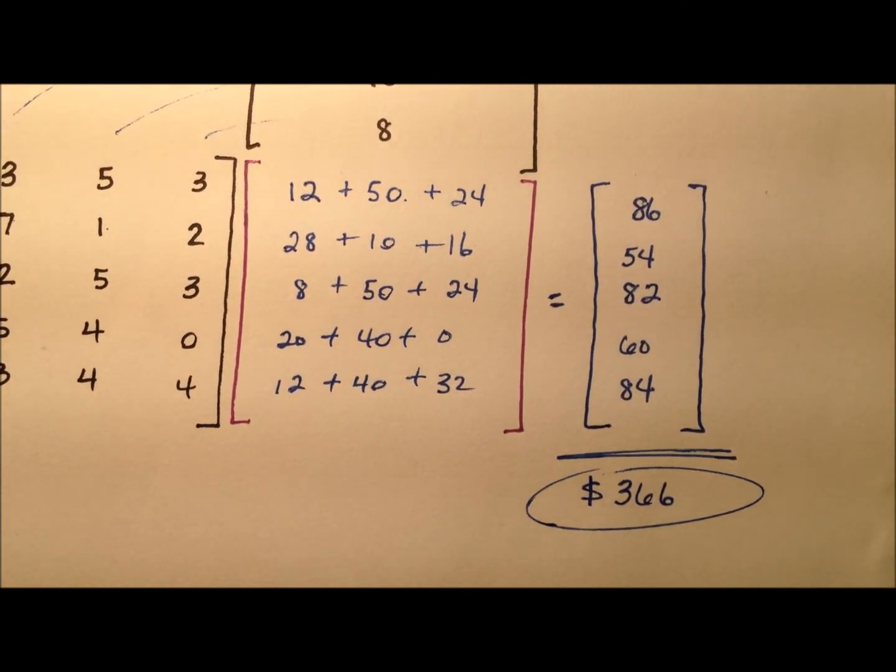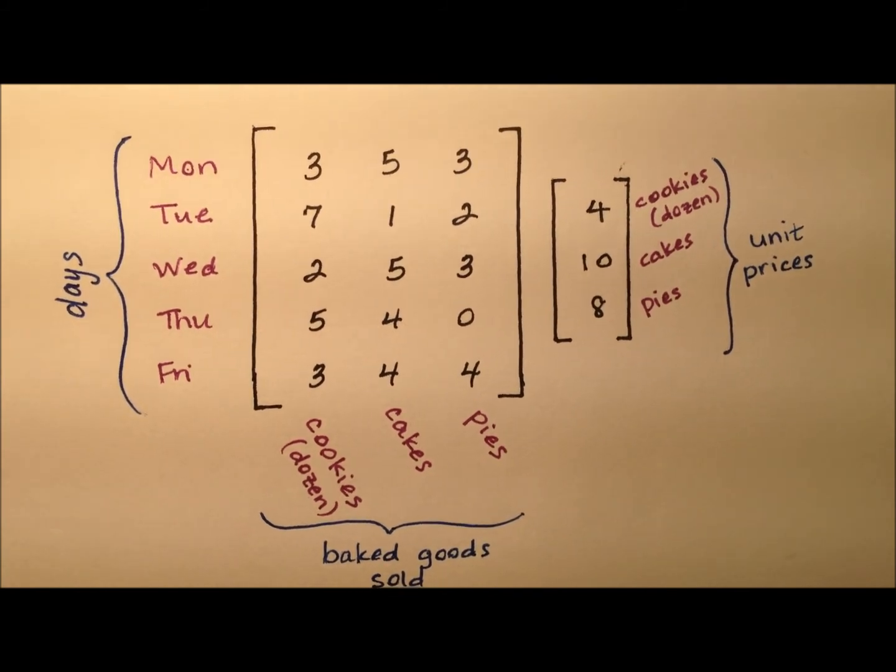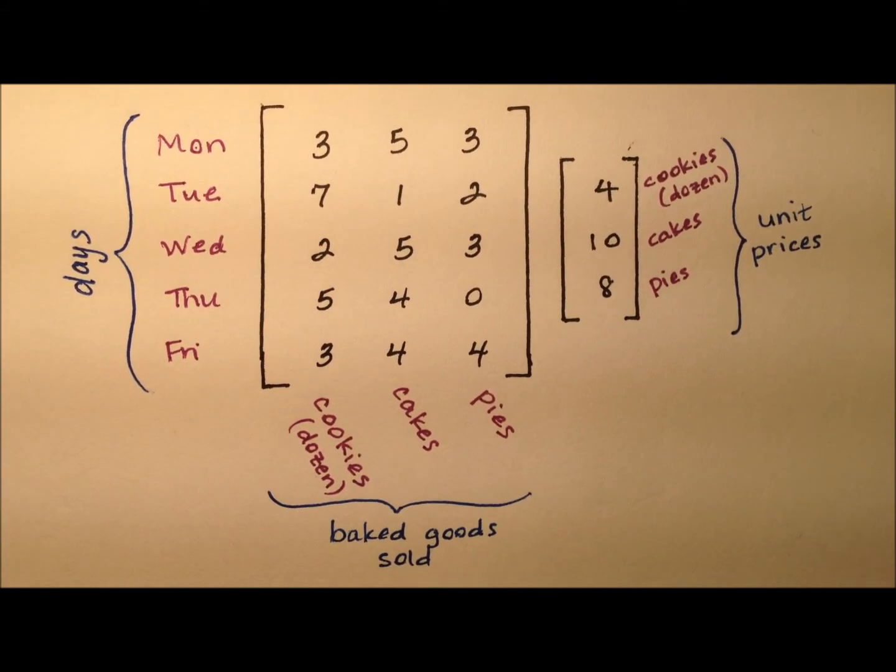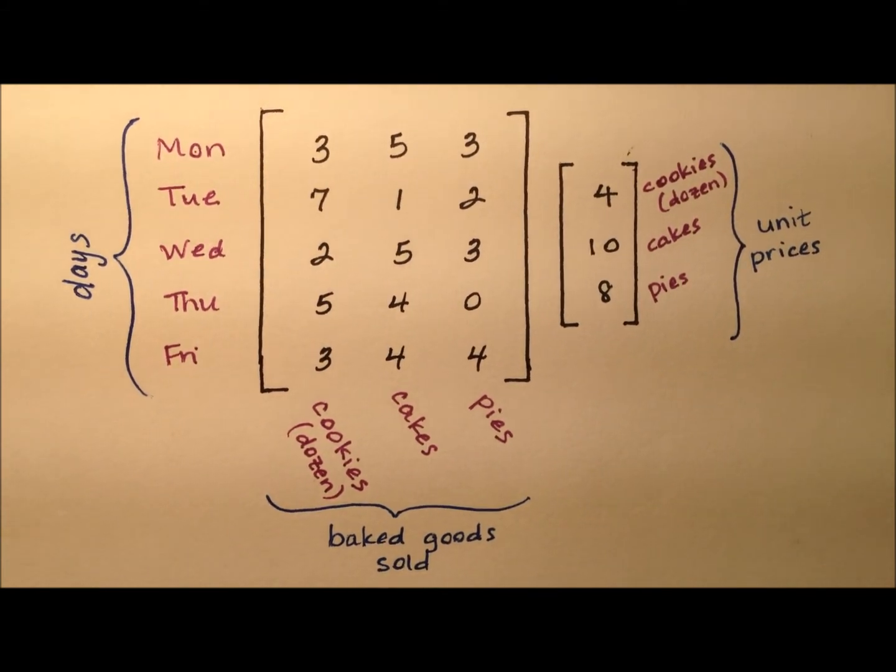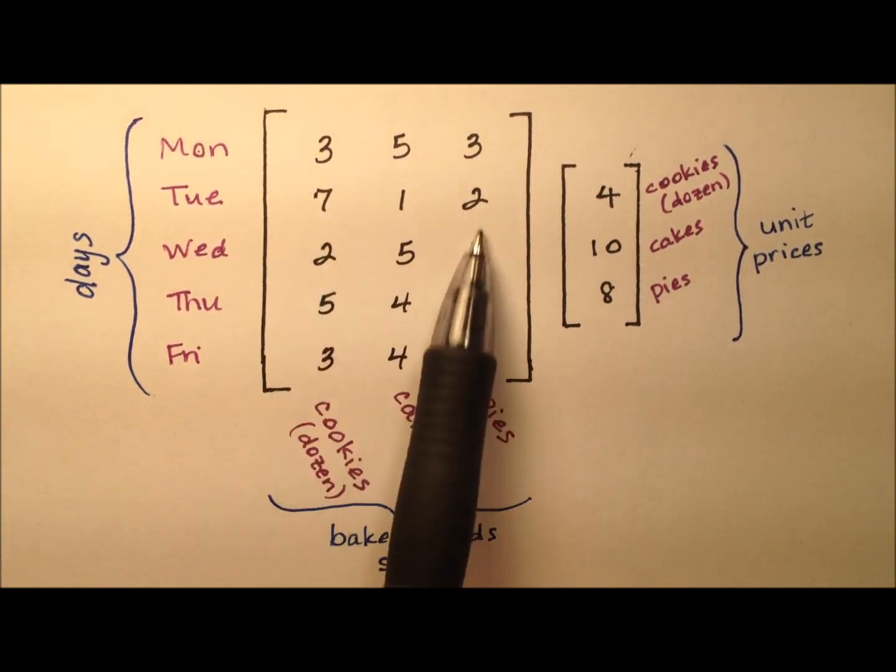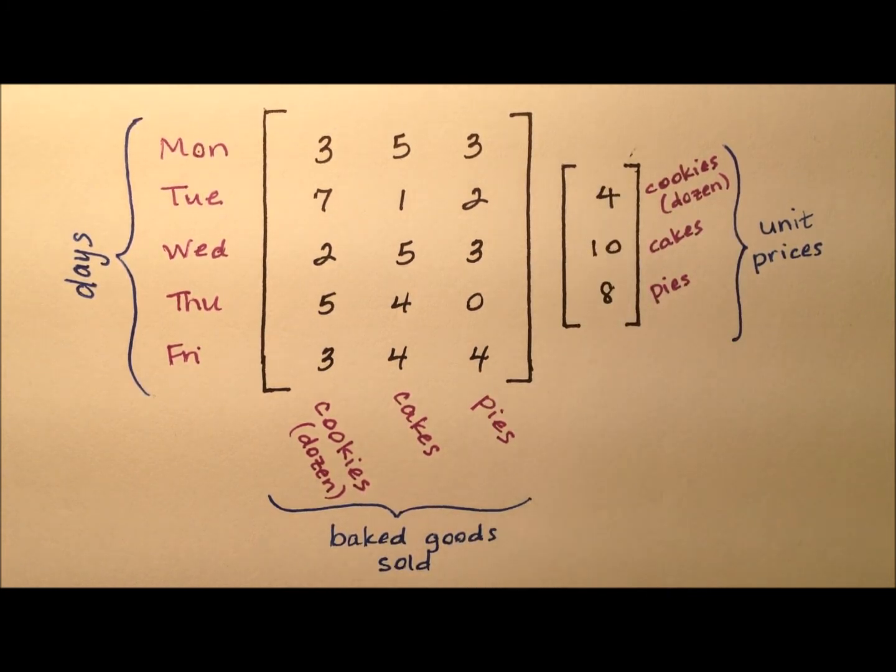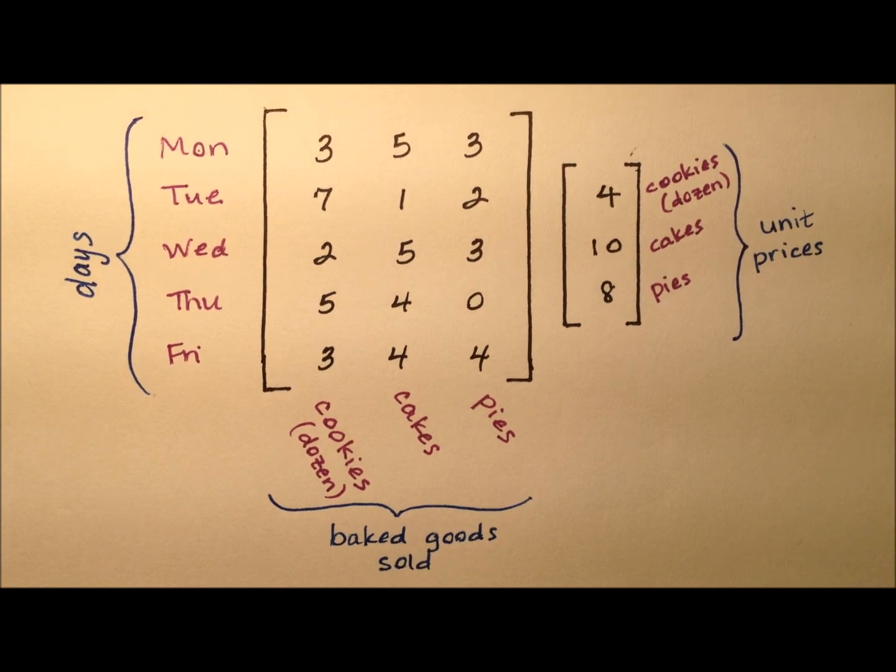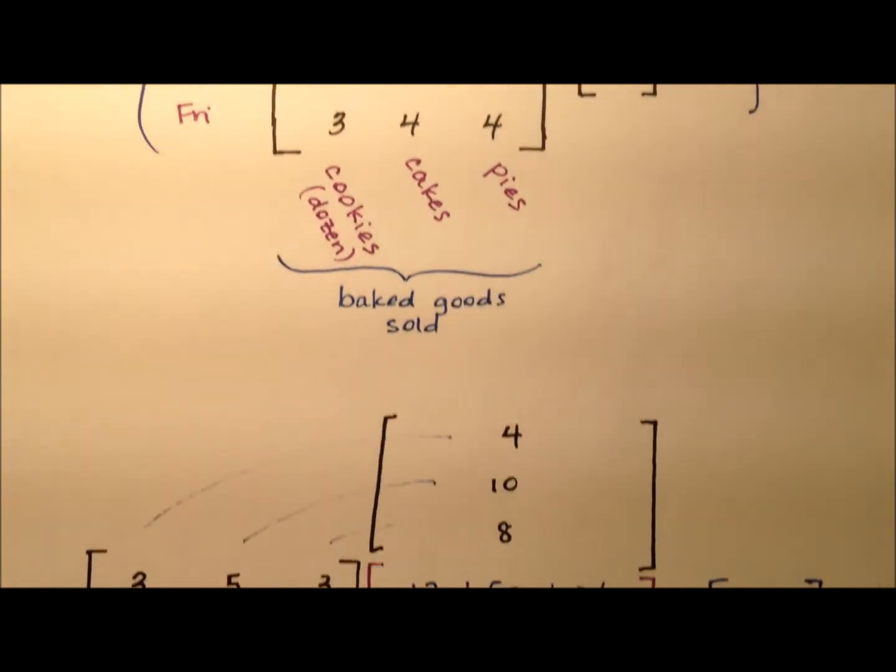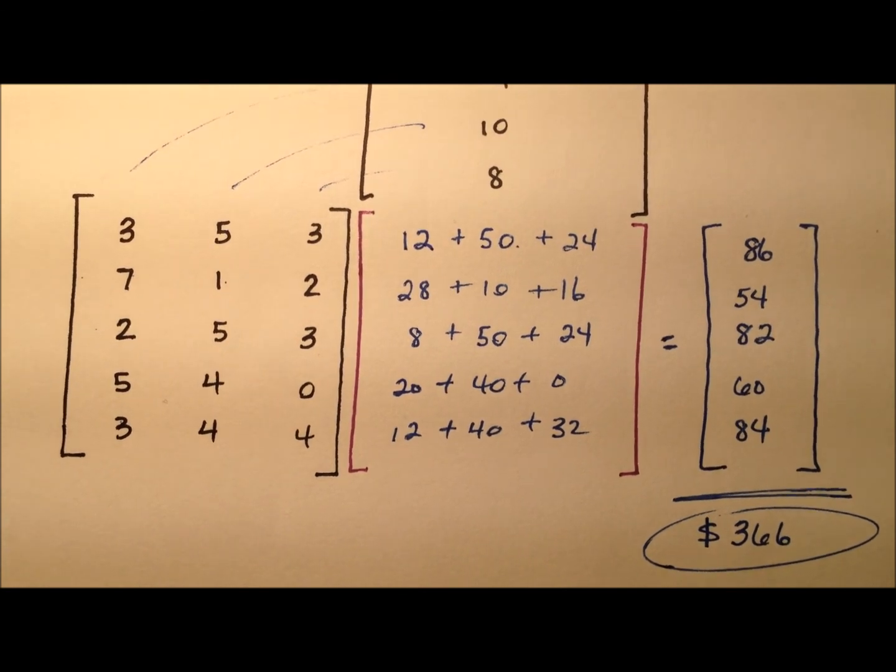Here is just a very basic and straightforward example of how matrix multiplication can be used in the real world. We had our data structures right up here, our two matrices that contained not only how many of each thing we sold each day, but then we were able to include our unit price column matrix. And that enabled us to do this multiplication, a very simple process that gave us a lot of good information about how much money that Julie made on this bake sale this week.